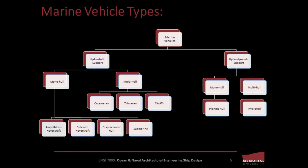Let's begin our examination by identifying the common order and families of hydrostatic vessels. Hydrostatic vessels comprise monohull and multi-hull vessels. Common monohull designs include sidewall hovercrafts, amphibious hovercraft, submarines, and the most common vessel type, the conventional displacement hull. Multi-hull craft include catamarans, trimarans, and SWATHs. Hydrodynamically supported vessels include planing hulls and hydrofoils.